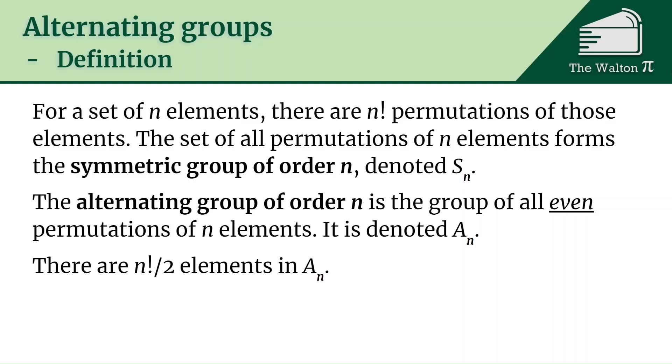It might make sense that there are half as many permutations in A_n. There are going to be n factorial over two elements in A_n. The alternating group A_n is always a subgroup of S_n.